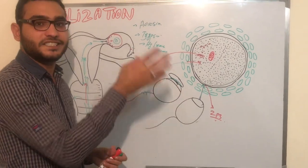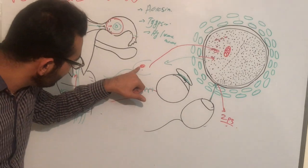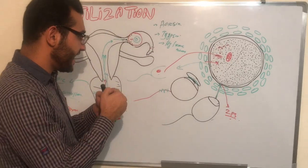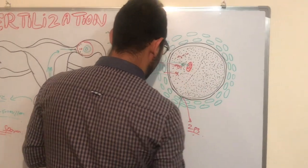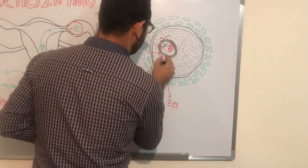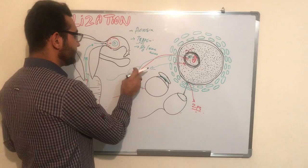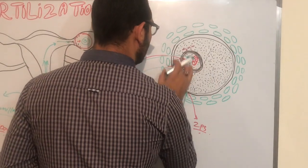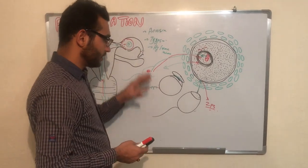All other sperms then die. There is a protein called disintegrin in the sperm and integrin protein in the ovum. When the integrin and disintegrin proteins attach to each other, the genetic material of the sperm enters the ovum. The genetic material of the ovum and sperm fuse together — this process is called fertilization. After fertilization, the process of cleavage, then blastocyst formation, and the entire pregnancy process begins.